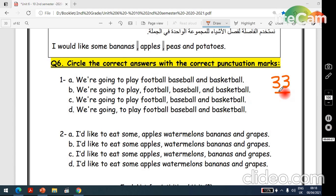Now let's move to page 33. Circle the correct answers with the correct punctuation marks. Now here, we're going to play football, baseball, and basketball. Okay, now look at the commas here. Okay, here and here. Here we don't have commas, so it's incorrect. This one, here we have a comma after play, no it's incorrect. C, we're going to play football, baseball, and basketball. Yes, so the correct answer is C. Okay, here we have a comma after football.